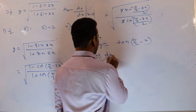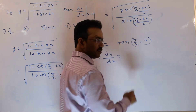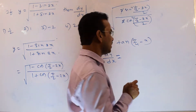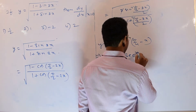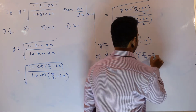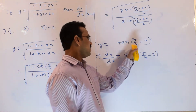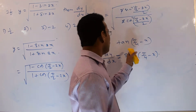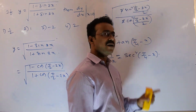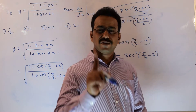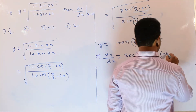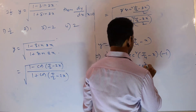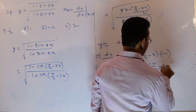Differentiating both sides with respect to x: the derivative of tan x is sec²x, so dy/dx equals sec²(π/4 minus x). Since it is a function of x and not x itself, we apply the chain rule. The derivative of π/4 is 0 and the derivative of minus x is minus 1, so finally we get minus sec²(π/4 minus x).